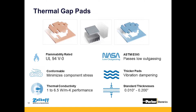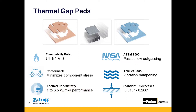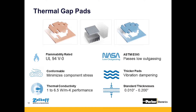Gap pads are offered in a wide range of sizes and thermal performance. From a size perspective, they range from small custom die-cut parts based on customer drawings to sheet format — either 18x18 inch sheets or up to 20x25 inch sheets. Thermally, the material is offered from 1 to 6.5 watts per meter Kelvin. Thicknesses range from 10 thousandths of an inch up to 200 thousandths, and for some applications we can go up to half an inch thickness. They are also offered with a variety of different carriers.